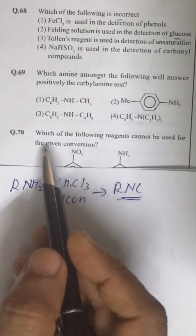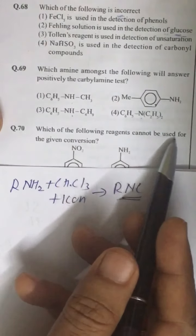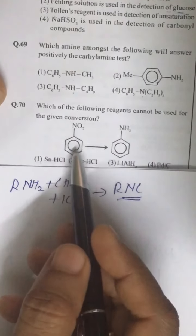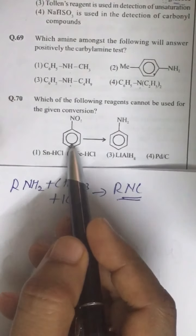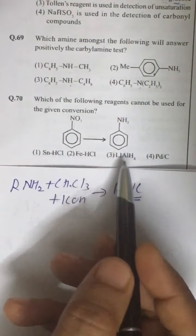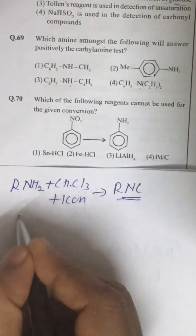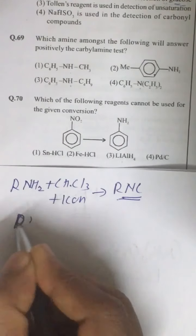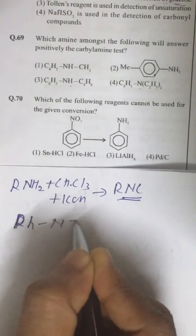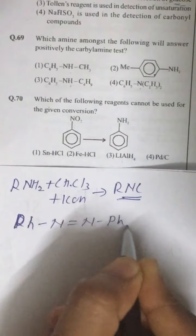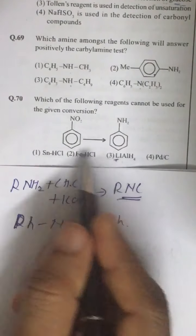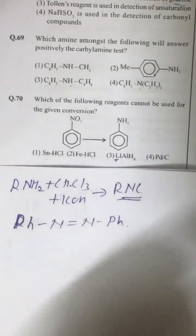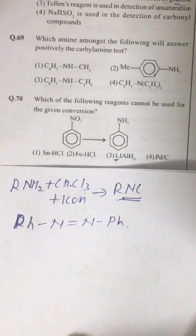Next question, question number 70. Which of the following reagents cannot be used for the given conversion? Like we want to convert nitrobenzene to aniline. LiAlH4 cannot be used. If LiAlH4 is used we get basically azobenzene. It is reduced to azobenzene. This LiAlH4 cannot be used for this conversion. Tin HCl we can use or Fe HCl etc we can use.